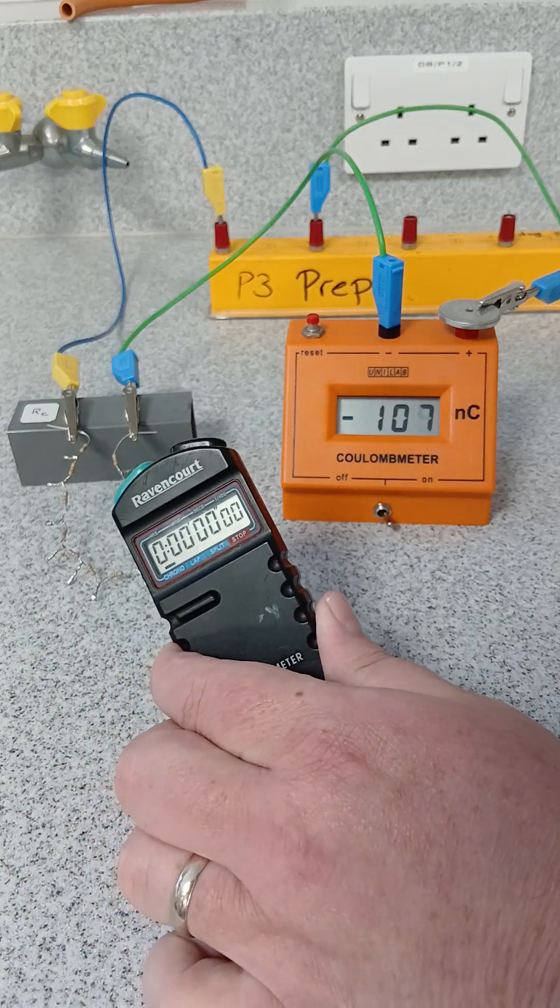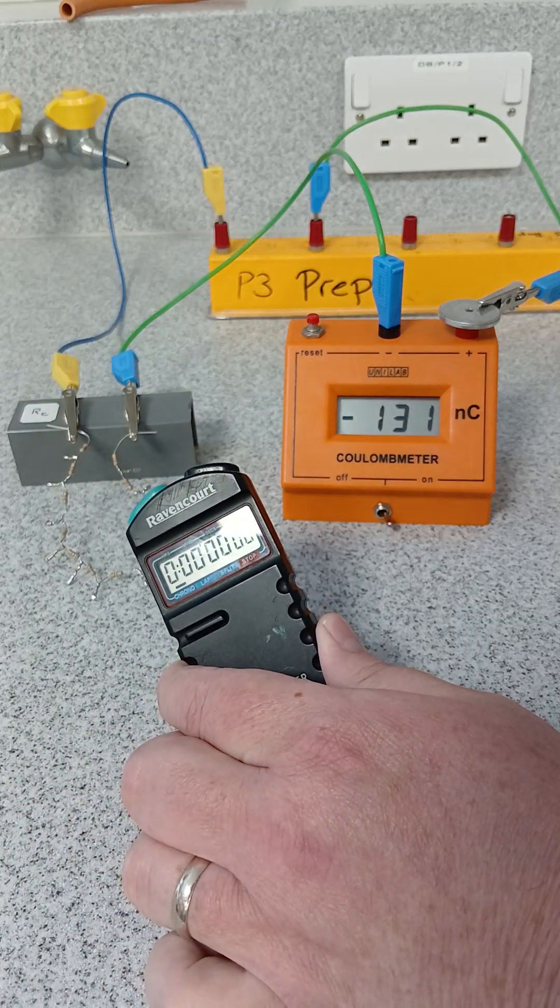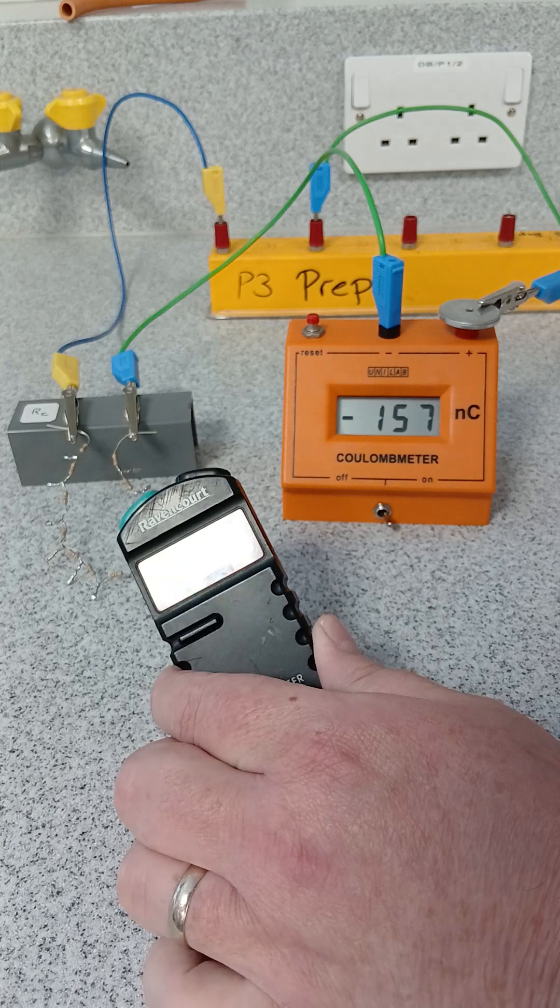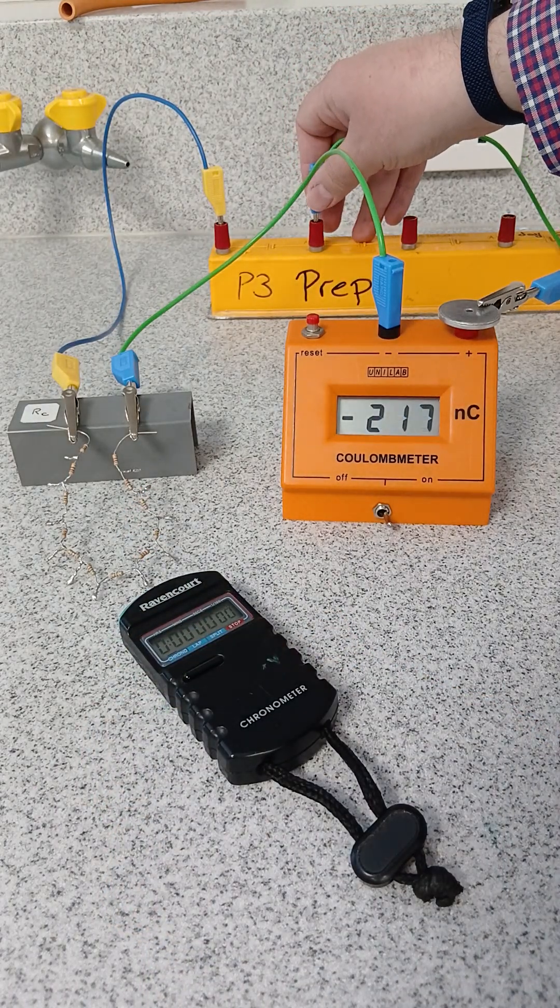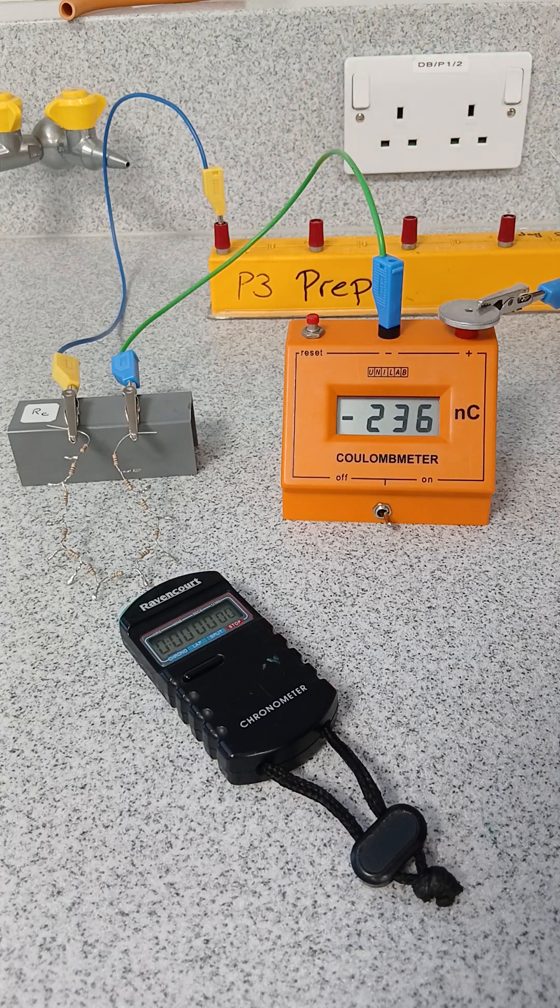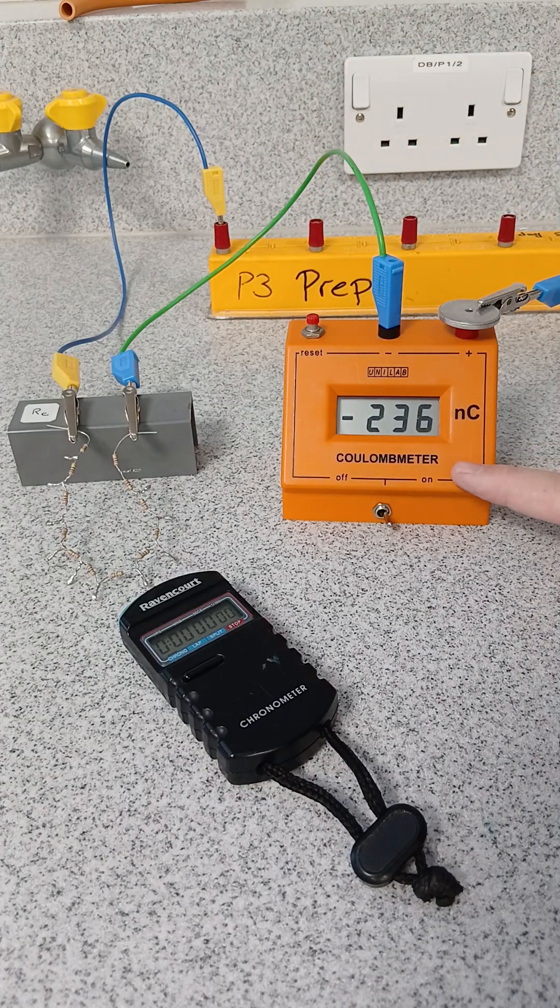Now you could also use a stopwatch. So when I connected the circuit together, we could have started the stopwatch as well. And then after a certain period of time, you can unplug it. And then that tells you how much charge has flowed.